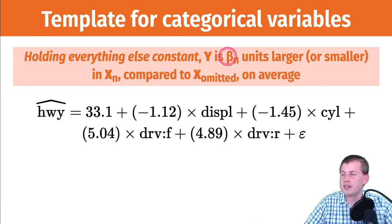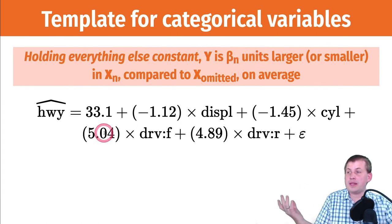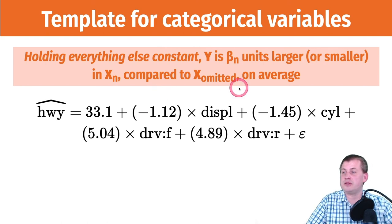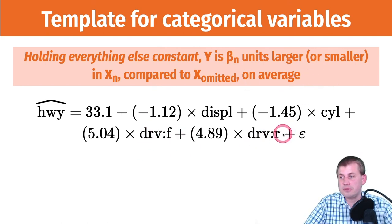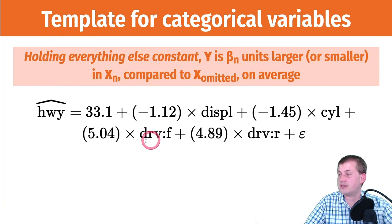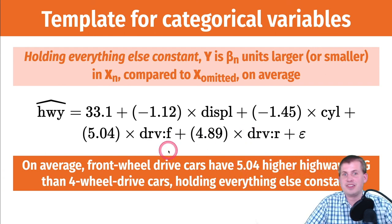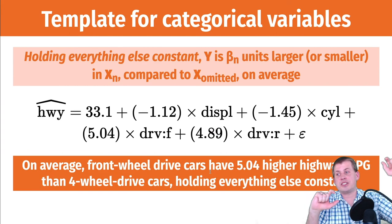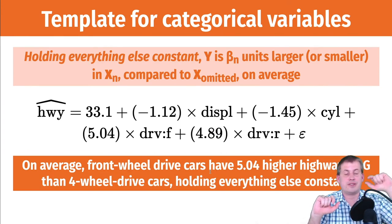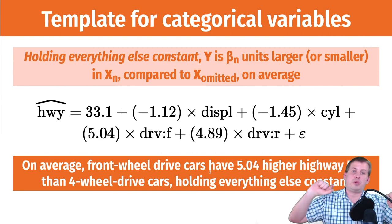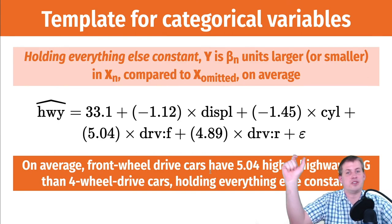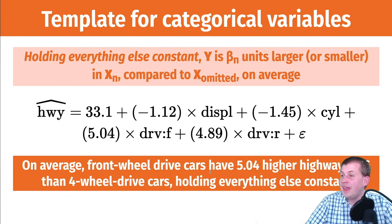For categorical variables the template is: 'Holding everything else constant, y is beta units larger or smaller compared to the omitted category.' For front-wheel-drive: on average, front-wheel-drive cars have about 5 higher highway miles per gallon than four-wheel-drive cars — holding displacement and cylinders constant. We didn't move any sliders; we just flipped one switch. That's how you interpret individual coefficients.